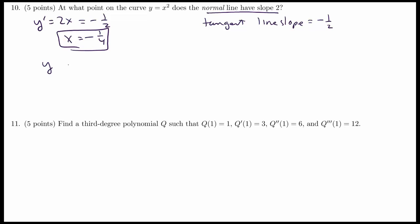out what the y coordinate is. The y value when x is negative 1/4 is negative 1/4 squared, which is 1/16. So the point is going to be negative 1/4 comma positive 1/16.